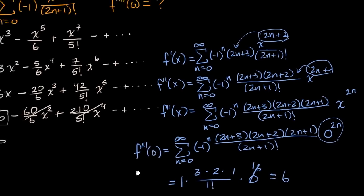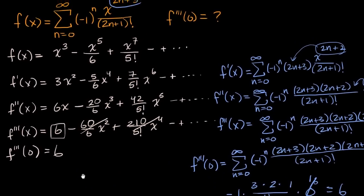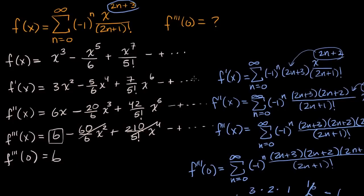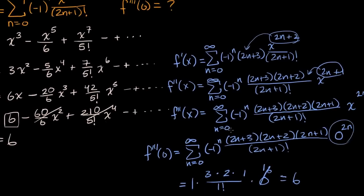So either way we get six. The first method was a little more straightforward and intuitive, but it's important to realize we did the same thing both times — we just kept it in sigma notation the second time. This technique is useful because in math you'll often want to work in a more general way, and it may be helpful to take derivatives while staying in sigma notation.